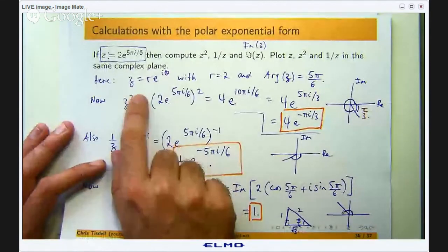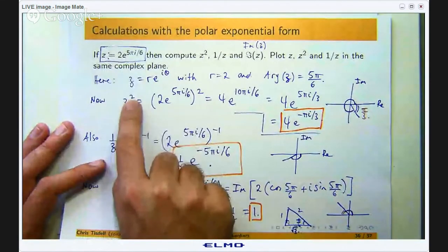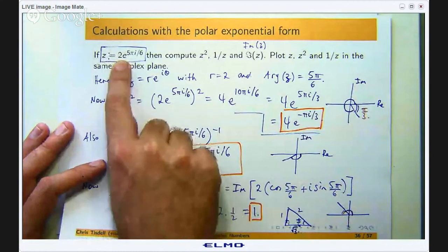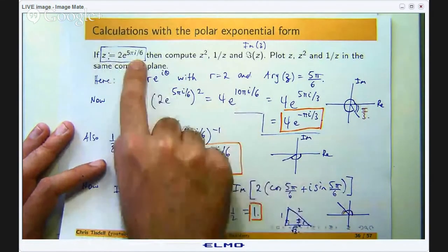When you take this number here and you take it to the power 2, you're squaring the length and you're doubling the angle associated with it.